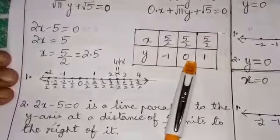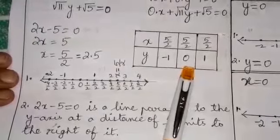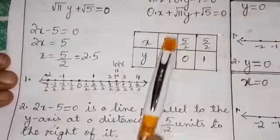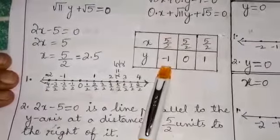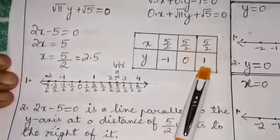Now when we plot these points on a graph paper, what are the points? 2.5 comma minus 1, 2.5 comma 0, 2.5 comma 1.